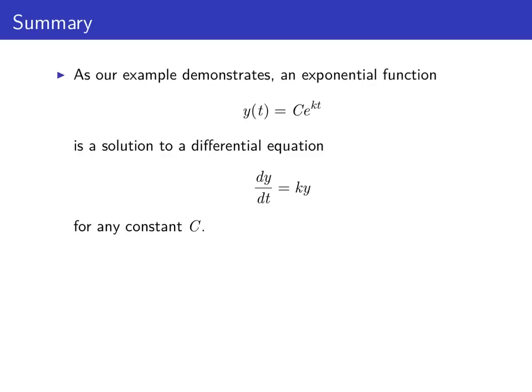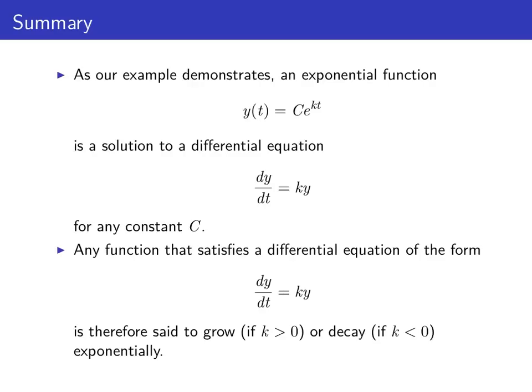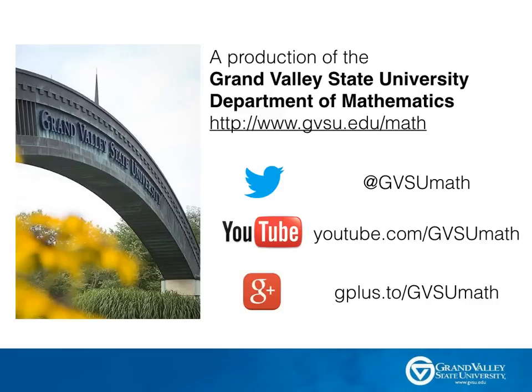To summarize, as our example demonstrates, an exponential function y(t) = c · e^(kt) is a solution to a differential equation of the form dy/dt = k · y. This means that any function satisfying dy/dt = k · y is said to grow exponentially — grow if k is positive and decay if k is negative. That concludes our screencast on differential equations modeling exponential growth. We hope to see you back again soon.